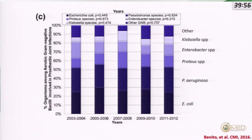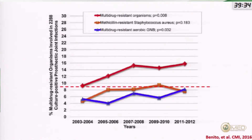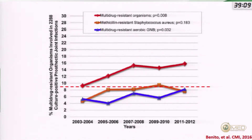When talking about gram-negatives in prosthetic joint infections, we are mainly talking about Enterobacteriaceae and Pseudomonas. Over a period of 10 years in Spain, the two most prevalent gram-negatives were Pseudomonas aeruginosa and E. coli, followed by other Enterobacteriaceae such as Klebsiella, Enterobacter, and Proteus. Regarding multidrug resistance, we have witnessed an overall increase in resistance over 10 years, driven especially by gram-negative bacilli, while gram-positive cocci showed less increase. The rise in resistance accounts mainly for gram-negatives.